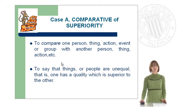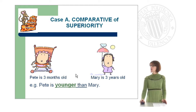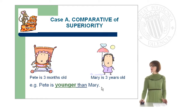Let's have a look at the pictures on the screen. Here we have two babies: Pete, who is three months old, and Mary, who is three years old. We have two entities and now we're going to compare them. If we want to use the adjective 'young', we would say that Pete is younger than Mary.